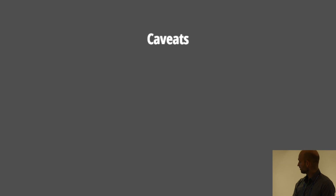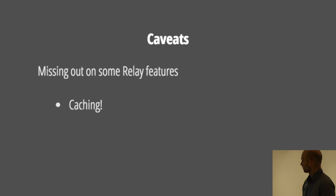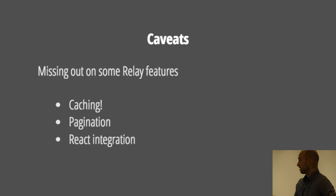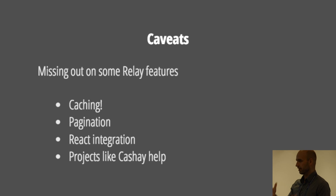There are some caveats. Relay is more than just a data fetching framework — it is a cache — so you're missing out on the caching that Relay does. Relay has some really cool features: for example, if you want to do pagination it does that out of the box, and if you don't use Relay you're missing out on that too. There are projects like Cache, which is a client-side GraphQL cache that does a lot of what Relay does. I don't think it's as advanced yet, but I'm sure it will get there as the community is moving to use Redux instead of Relay.